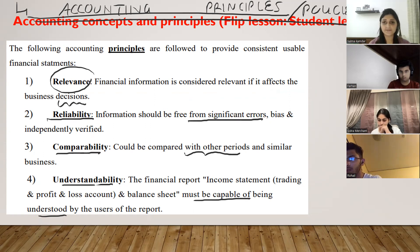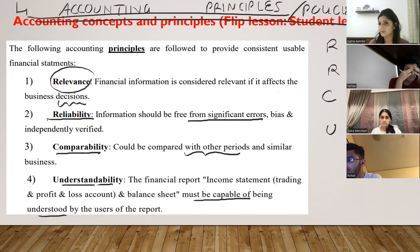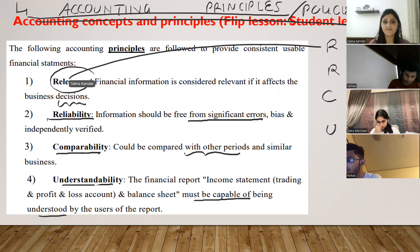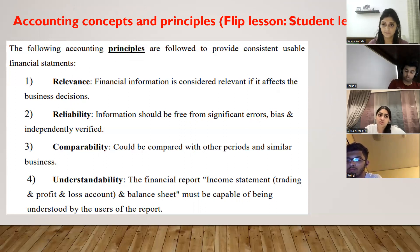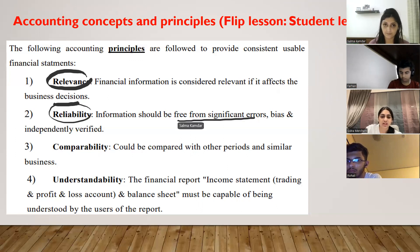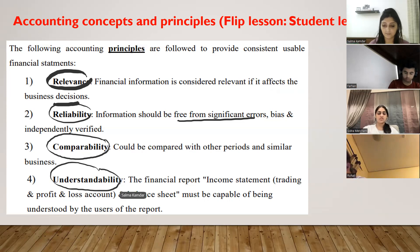The four accounting principles are relevance, reliability, comparability, and understandability. Sidra explains: relevance means financial information helps in making decisions needed for the business; reliability means the financial information is free from all errors and is verified; comparability means it can be compared with similar businesses or different periods; understandability means it should be understood by all users of the reports.